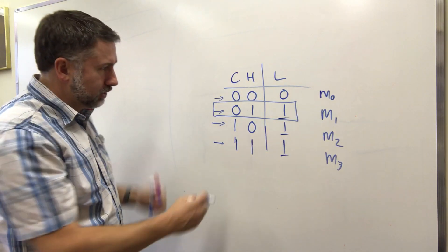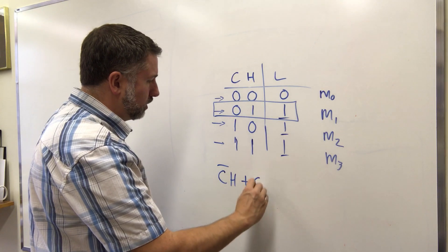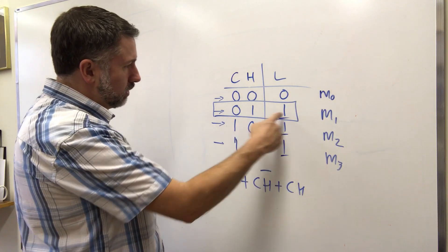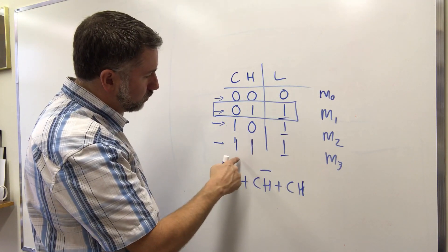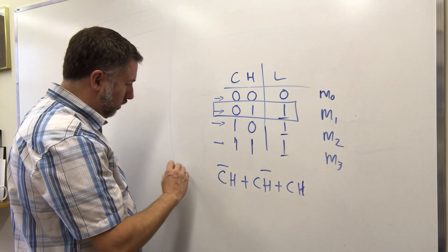This original function is C prime H or CH prime or CH. Those are the three terms that are one in this truth table, which means if any of these input combinations are true, that lights up one of these terms and that causes the output to be 1.